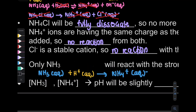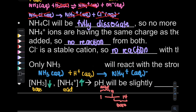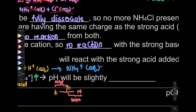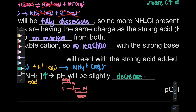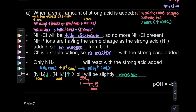So what happens: the concentration of NH3 will decrease, and the concentration of NH4+ will increase. NH3 is your base and NH4+ is your acid. On the pH scale from 1 to 14, acid is pH 1 to 7. Since acid increases, the pH will slightly decrease. That is the reaction of the basic buffer with strong acid.